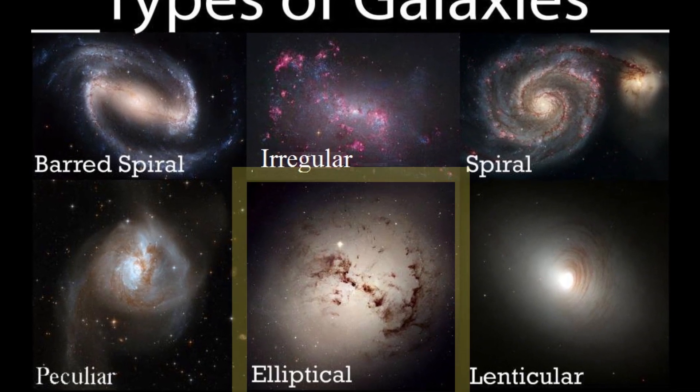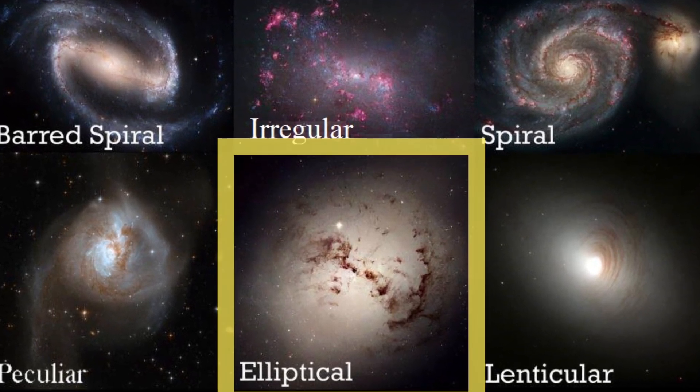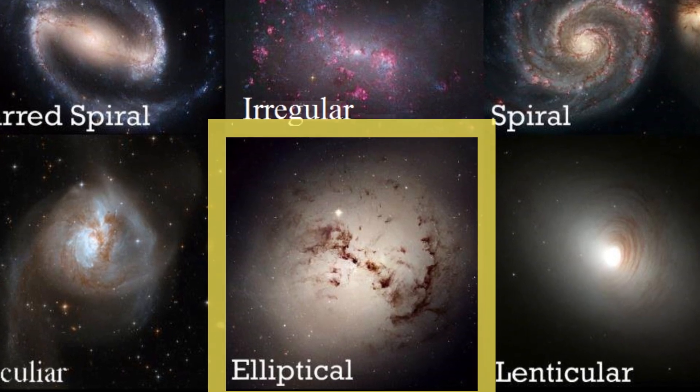The result? A likely elliptical galaxy, quite different from the spiral shape of the Milky Way and Andromeda we know today.